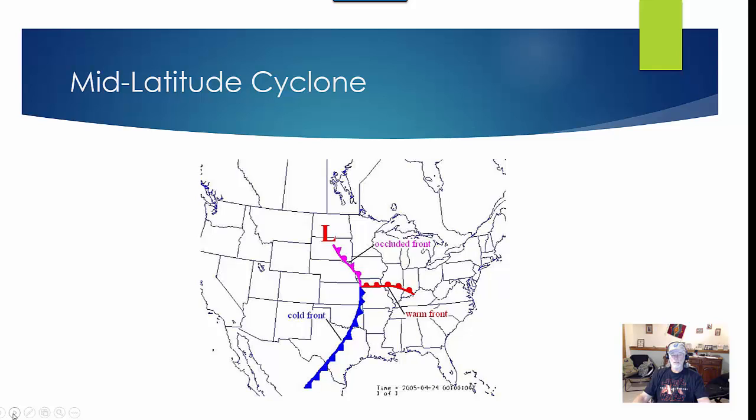Mid-latitude cyclone or mid-latitude wave. We have a warm front here with the half circles. Behind this whole idea of this mid-latitude wave, we have what's called the warm sector. Actually, as I'm recording this, we are definitely getting in the warm sector right now.